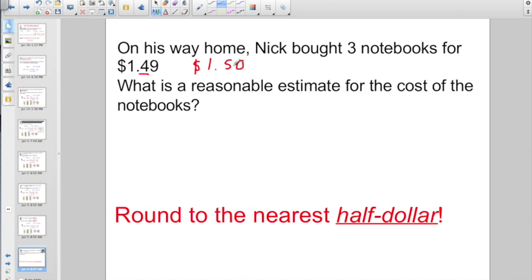So, if we round to the nearest half dollar, $1.49 is closest to a dollar and a half. I bet you we can still do this mentally in our head. Three notebooks for a dollar fifty. $1.50 plus another $1.50 plus another $1.50. Do you have it? Hopefully you do. It's pretty easy. $4.50, right?